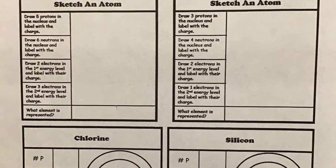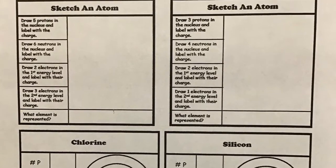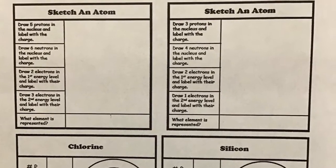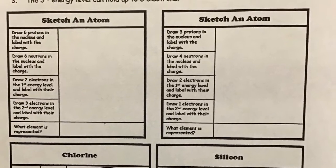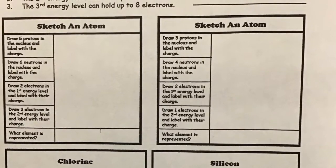The Bohr model looks like a bullseye with each ring representing a different level of energy. Each energy level has a certain number of electrons it can hold. You will need to memorize how many can fit into each level.